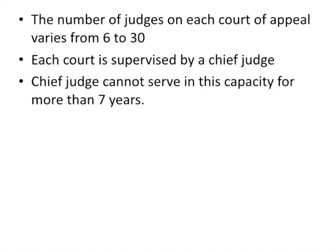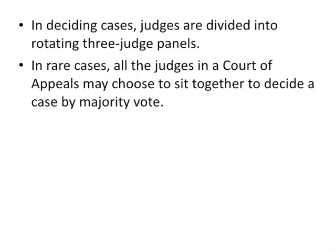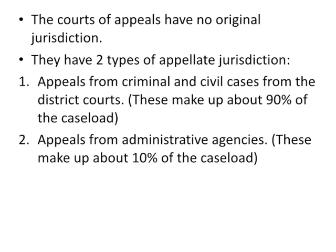The number of judges on the appellate courts varies between 6 and 30, depending on the expected caseload. But almost all cases are decided by a panel of three judges. It's very rare that all judges — whatever the number for a particular appellate court — sit on one case. They rotate panel from panel, with different panels reviewing different cases. A chief judge cannot serve in that capacity for more than seven years on an appellate court. The courts of appeal have no original jurisdiction — they hear only appeals.